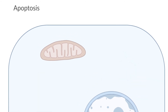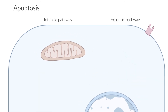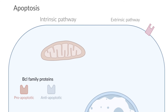Apoptosis can be initiated by two different pathways: the intrinsic or the extrinsic pathway. The intrinsic pathway is regulated by proteins from the BCL family, which contain pro-apoptotic and anti-apoptotic members. The body's cells have chemical sensors that react to cell damage. Once activated, there is a shift in the balance between pro-apoptotic and anti-apoptotic proteins towards apoptosis.